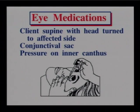For eye medications, have the client supine with the head turned slightly toward the affected side. Eye drops go into the conjunctival sac — pull the lower lid down and instill the drops there, not on the pupil or iris. Put a little pressure on the inner canthus to prevent medication from going out the tear duct into systemic circulation and to prevent a runny nose.